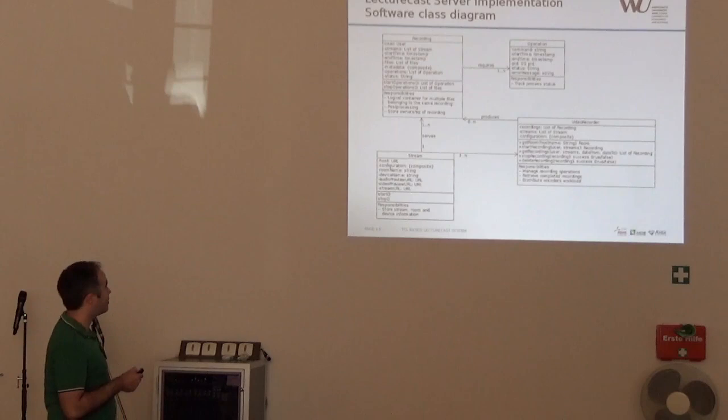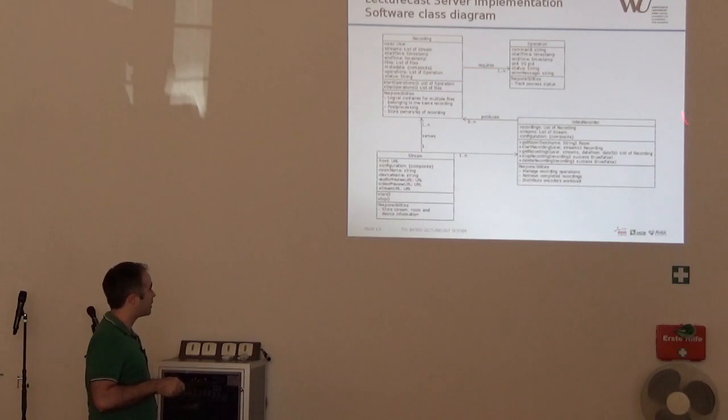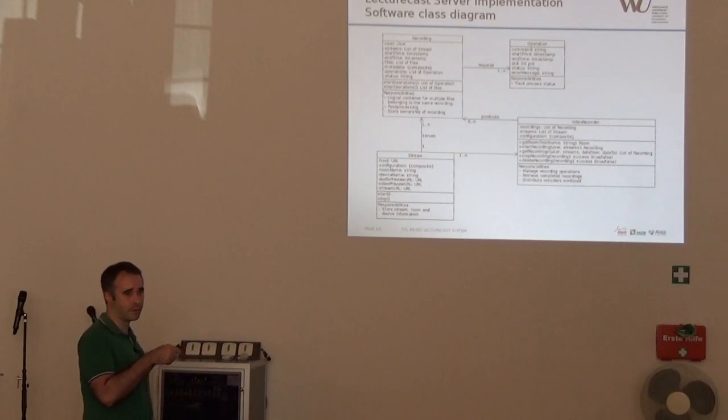This is the class diagram of the backend, the lecture cast server. This video recorder class is a singleton class which takes care of collecting and maintaining a list of streams, which are defined by the room name and the device name. Room name is the internal name we assign to every room in the campus, and device name might be either camera or PC. Every stream can be associated to a particular recording which is also managed by the video recorder. A recording consists of different operations such as the physical interaction with the stream and the ffmpeg commands that compose the actual recording.